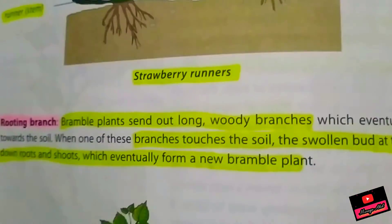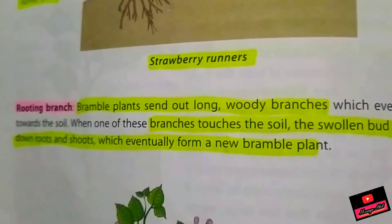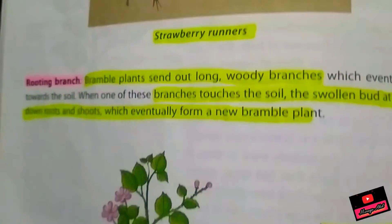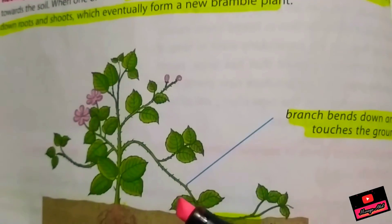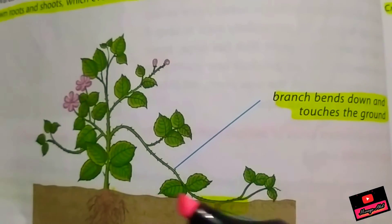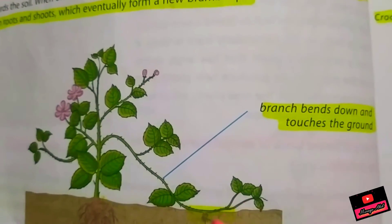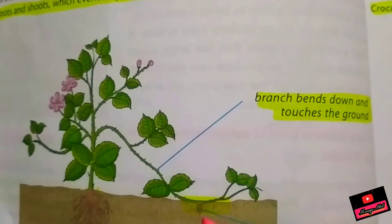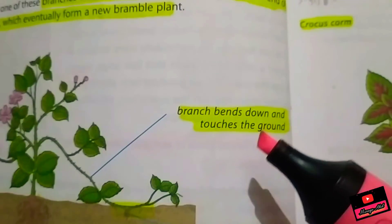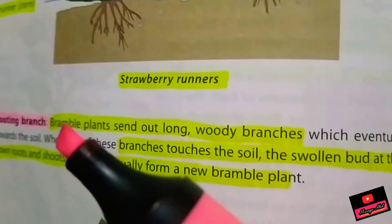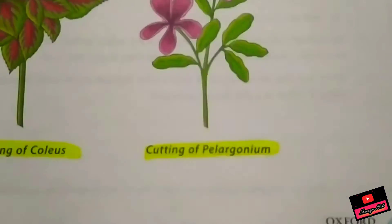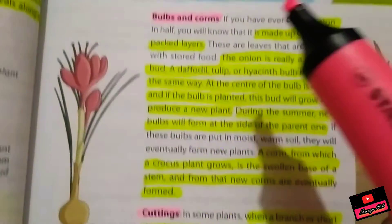Rooting branch is the branch which is woody. Similar to a runner, one of the stems grows along the surface of the soil, but this type is a woody branch. It sends out some roots and this branch grows into a new, independent plant. This mainly occurs in bramble plants and in mint.